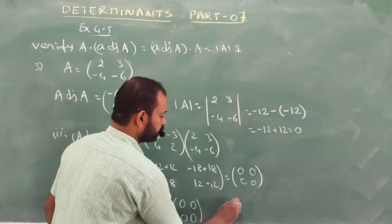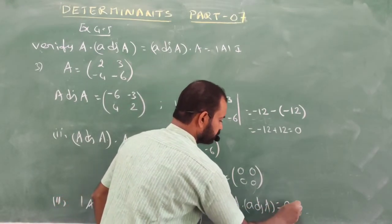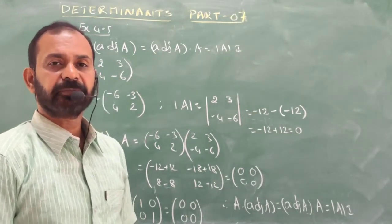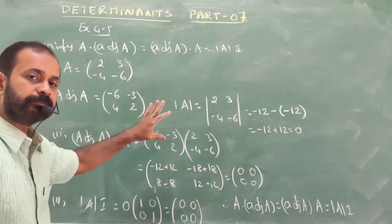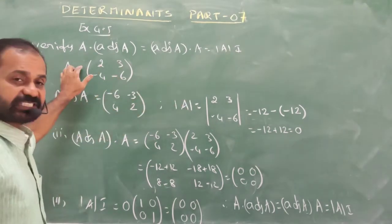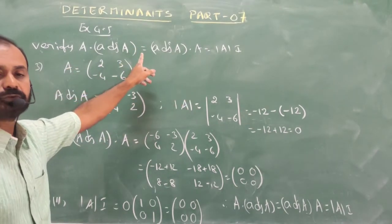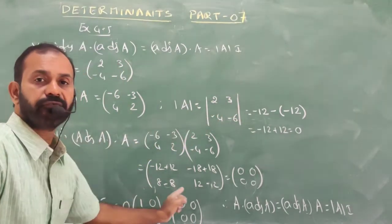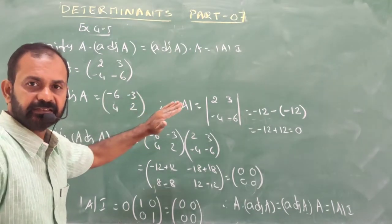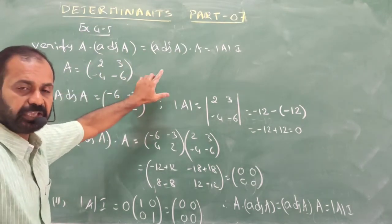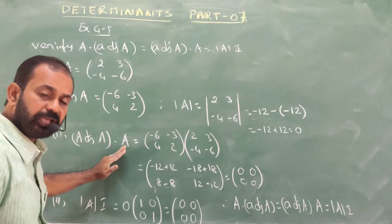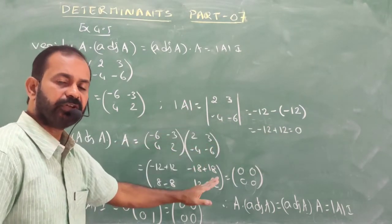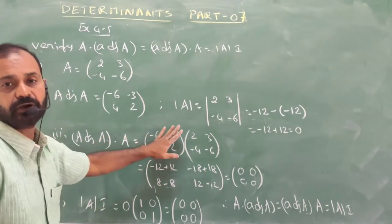We can conclude that A × adjoint A = adjoint A × A = |A| × I. For problem 4 (3×3 matrix), you have to do it yourself: first find adjoint A following the second problem method, then multiply A × adj A and adj A × A, then find |A| × I and check if all are equal.